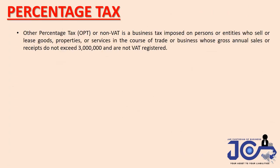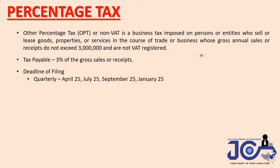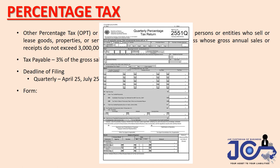Next is percentage tax, also called NARVAT or Other Percentage Tax. It is a business tax imposed on persons or entities who sell or lease goods, properties, or services in the course of trade or business whose gross annual sales or receipts do not exceed 3 million pesos and who are not VAT-registered. The tax payable is 3% of gross sales or receipts. If your yearly gross income exceeds 3 million, you automatically become VAT-registered. Filing is quarterly: April 25 for Q1, July 25 for Q2, September 25 for Q3, and January 25 for Q4. The form used is 2551Q.